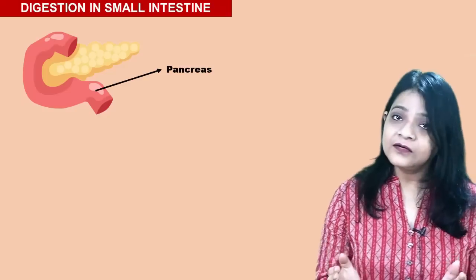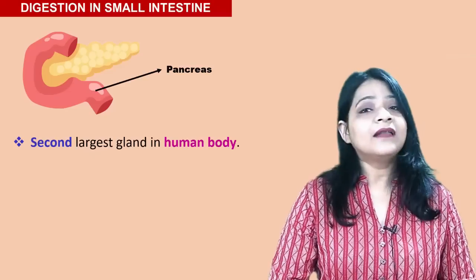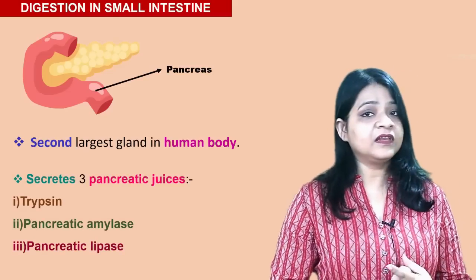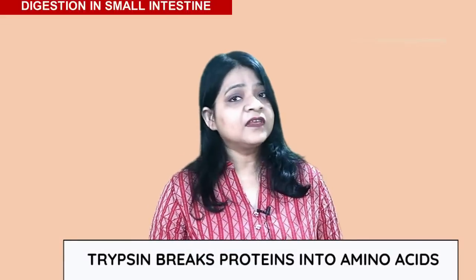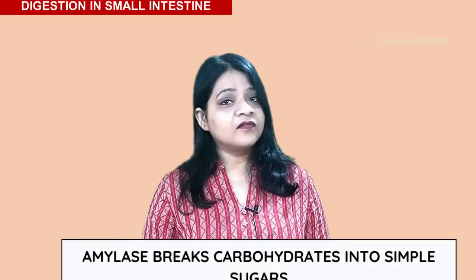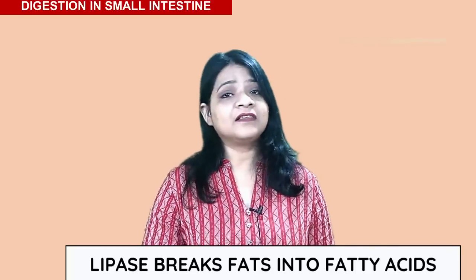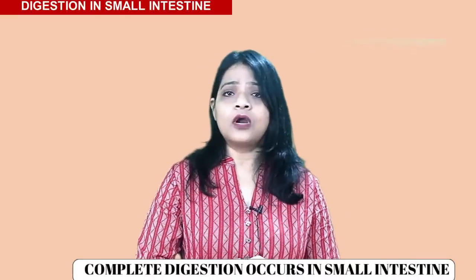The pancreas is the second largest gland in the human body. The pancreas secretes three types of juices: the first one is trypsin, the second one is pancreatic amylase, and the third one is pancreatic lipase. Trypsin digests protein; pancreatic amylase breaks carbohydrates into simpler sugars; and pancreatic lipase breaks fats into fatty acids. Thus the complete digestion occurs in the small intestine itself.